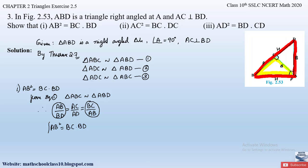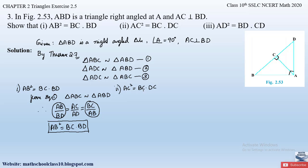Now let us prove the second part: AC² = BC·DC. We consider the sides BC and DC — BC belongs to triangle ABC and DC belongs to triangle ADC. We need to show these triangles are similar to take the ratio of corresponding sides. From equation 3, we have already written that triangle ADC ~ triangle ABC.